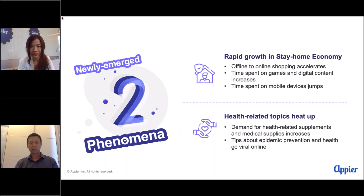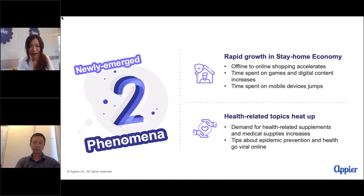Several of these consumer behavior changes may last even after the pandemic. Summarizing the cases we've studied, two newly emerged phenomena stand out. Number one is the rapid growth of the stay-home economy: offline-to-online shopping has accelerated, time spent on games and digital content has increased significantly, and time spent on mobile devices has grown while PC usage has declined. The second phenomenon is that health-related topics have heated up — demand for health supplements and medical supplies has increased dramatically, and pandemic prevention and health tips are going viral online.